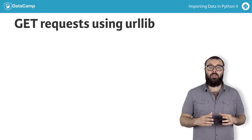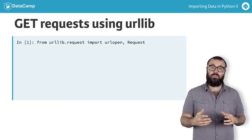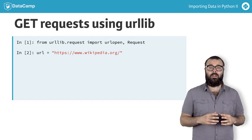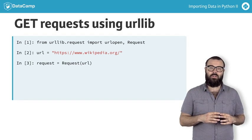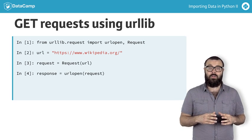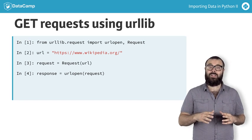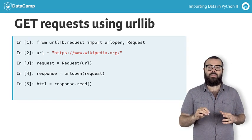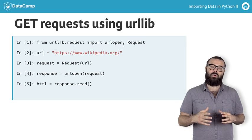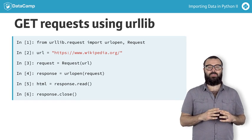To extract the HTML from the Wikipedia homepage, for example, you import the necessary functions, specify the URL, package the GET request using the function request, and send the request and catch the response using the function URL open. This returns an HTTP response object, which has an associated read method. You then apply this read method to the response, which returns the HTML as a string, which you store in the variable HTML. Finally, you remember to be polite and close the response.